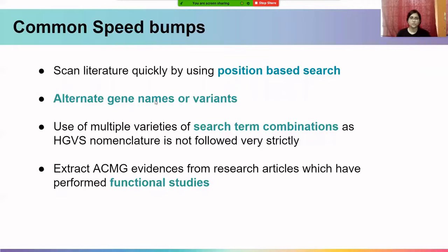One should also know that there are several ways to report a variant, which forces us to use several search term combinations. One major problem is understanding whether the experimental evidence is sufficient to classify a variant, and there is a lot of confusion around this. By the end of this lecture, we will learn how to use literature and experimental evidence to sufficiently classify the variant with confidence.